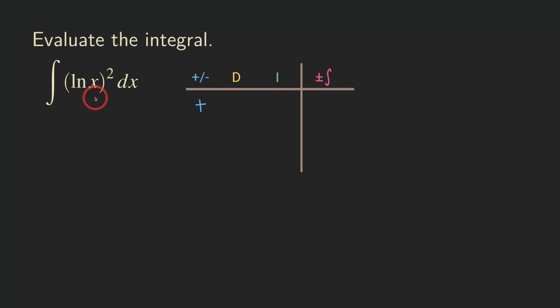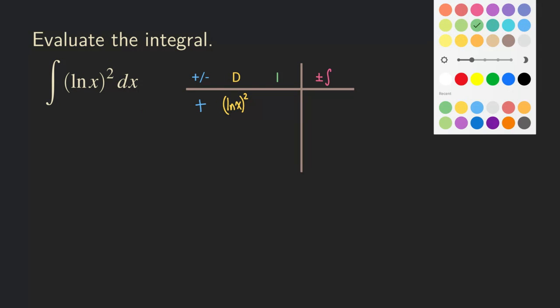We can simply just let u be the whole function, be the whole ln function here. So if we do that, then we are going to let u be ln of x and then the whole quantity squared. Then you may say, what about the i then? What about the i column?